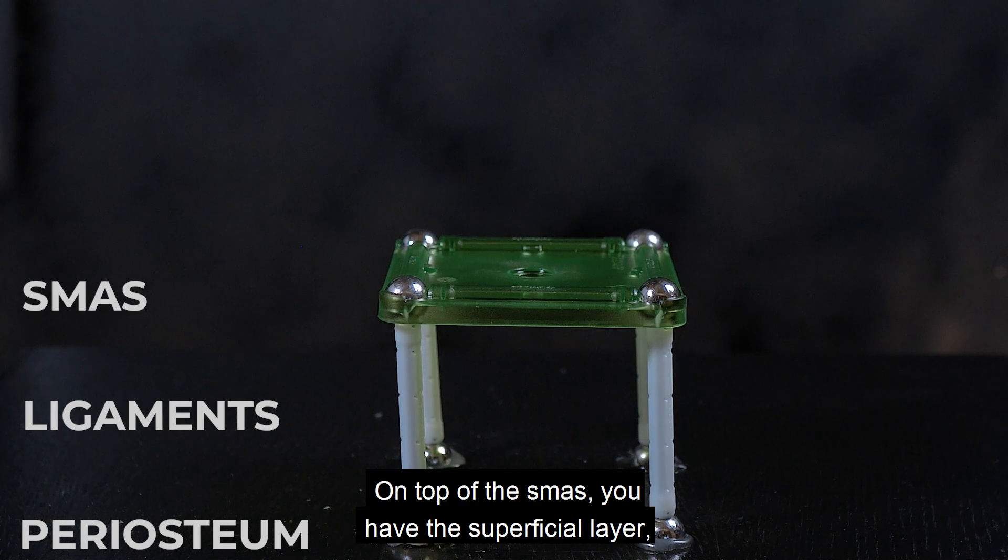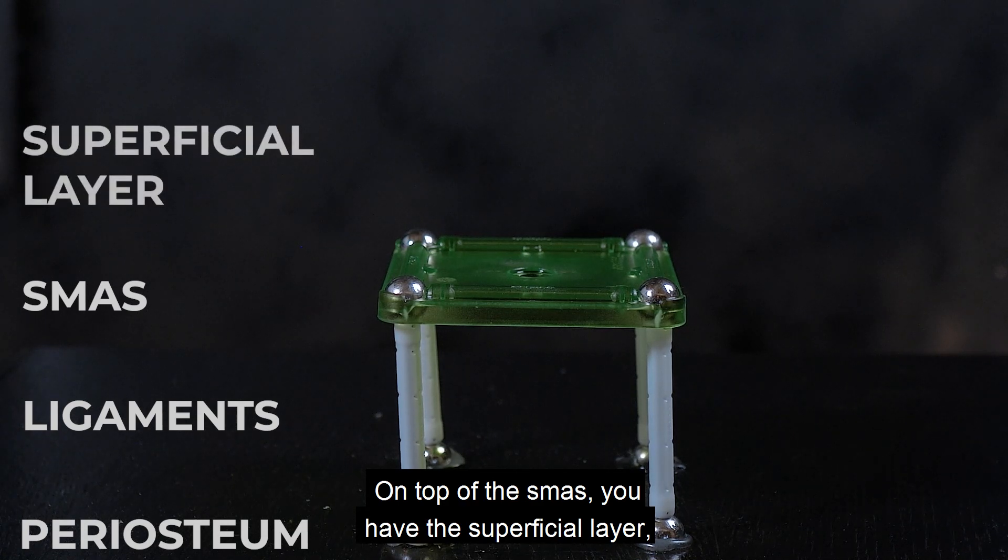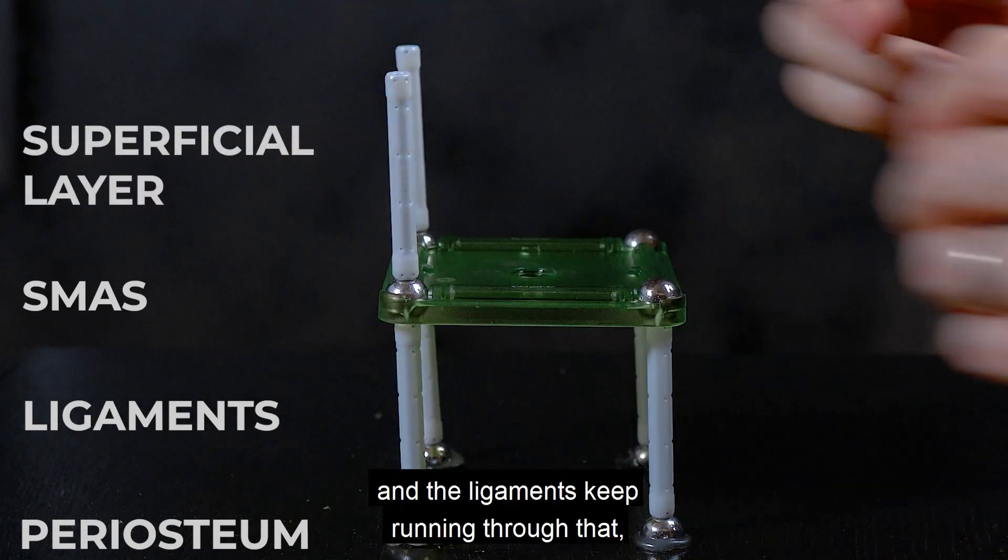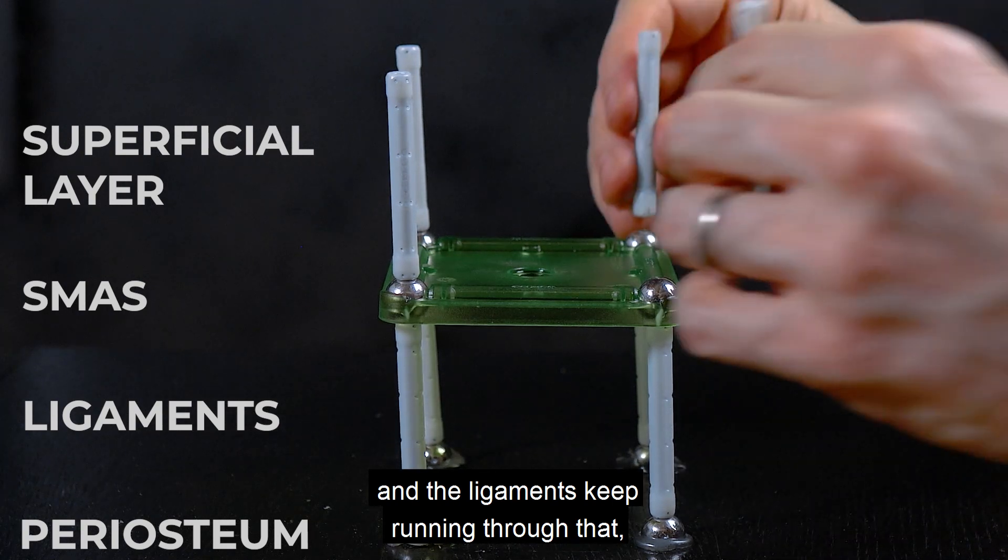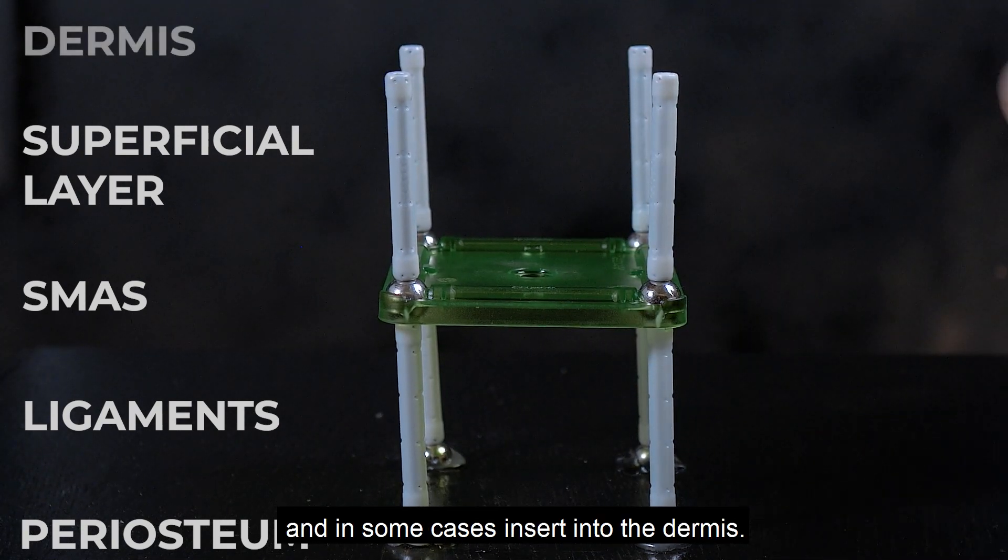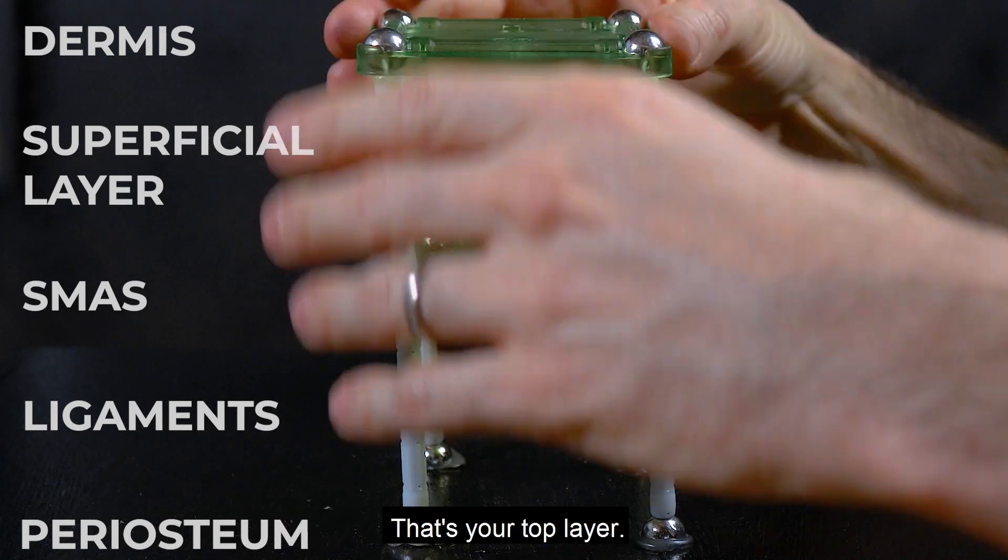On top of the SMAS you have the superficial layer and the ligaments keep running through that and in some cases insert into the dermis. That's your top layer.